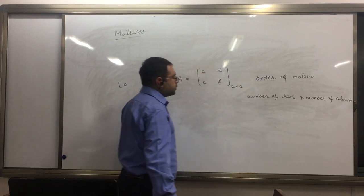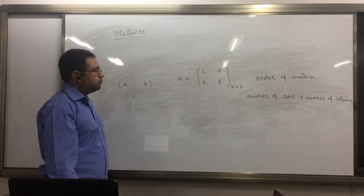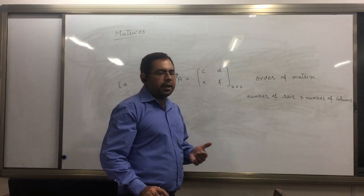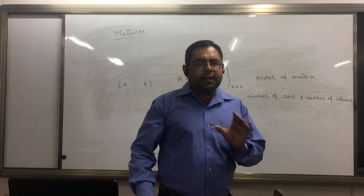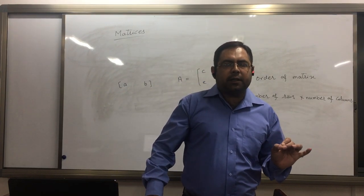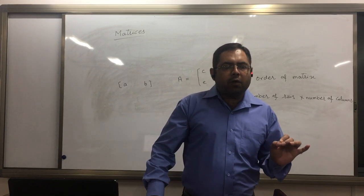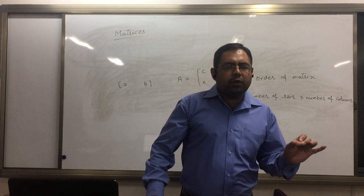One thing must be remembered: a square matrix is always that matrix which has number of rows equal to number of columns.